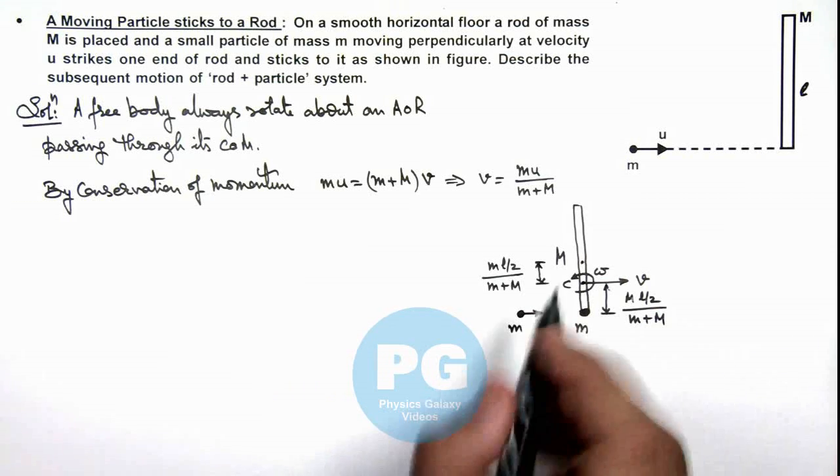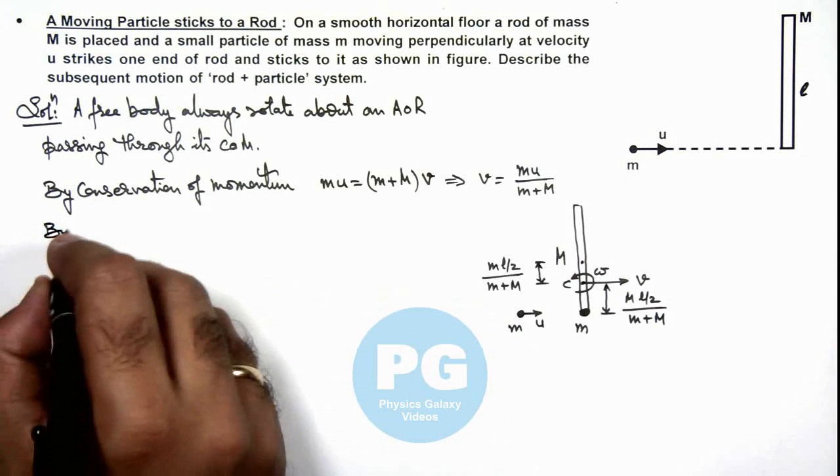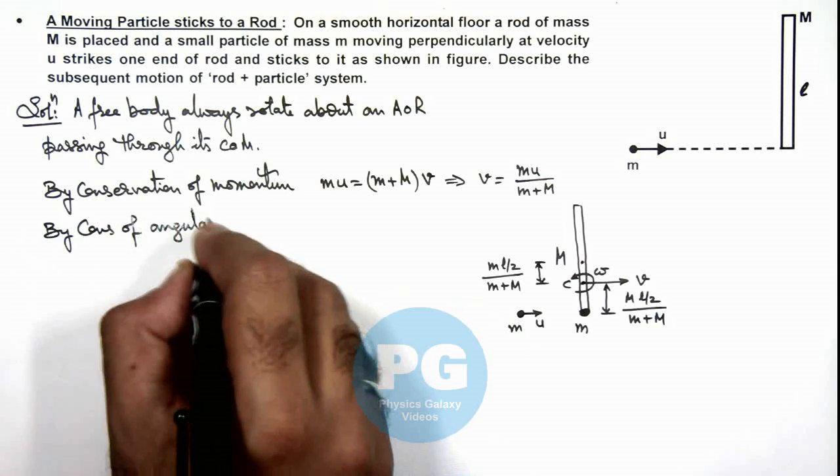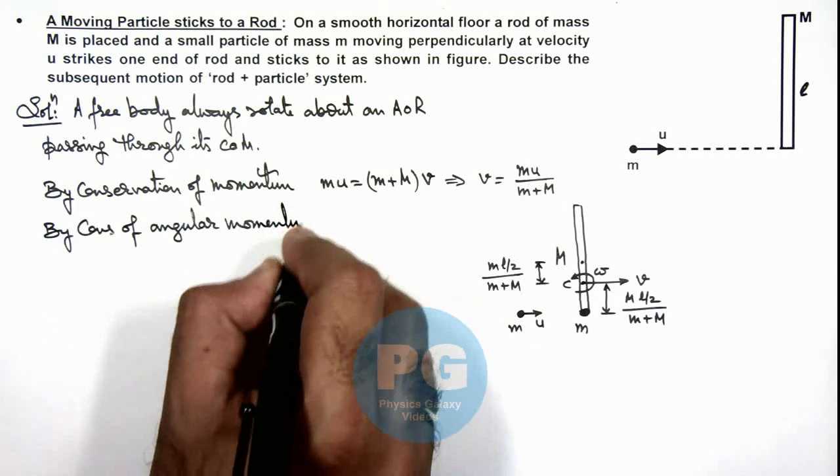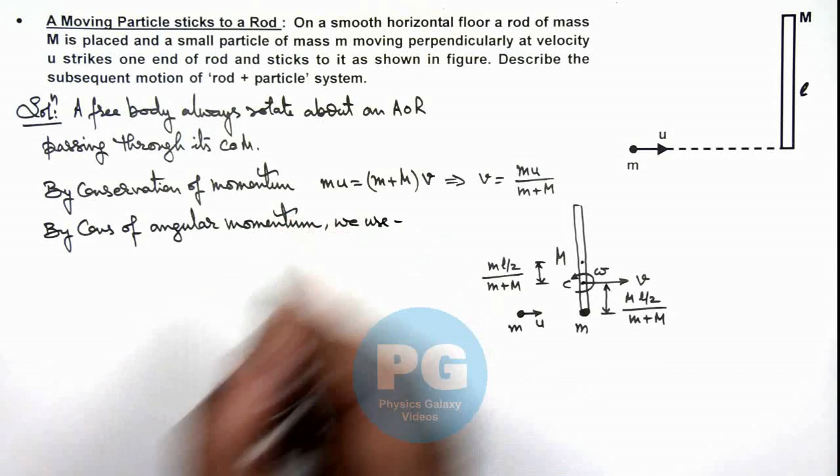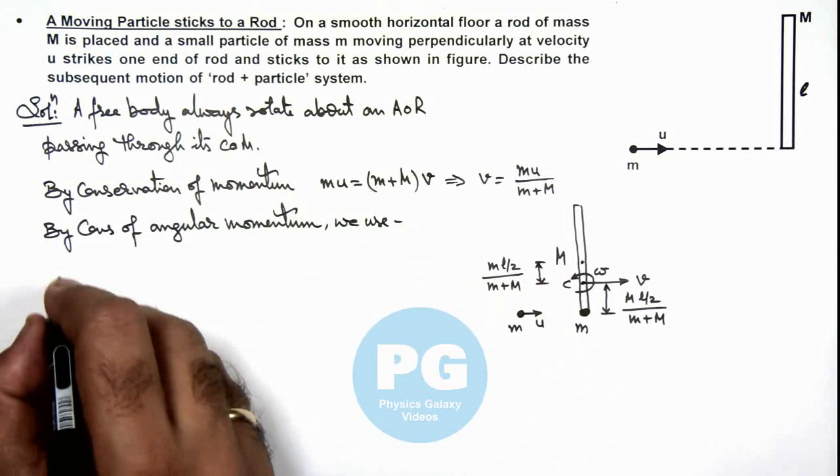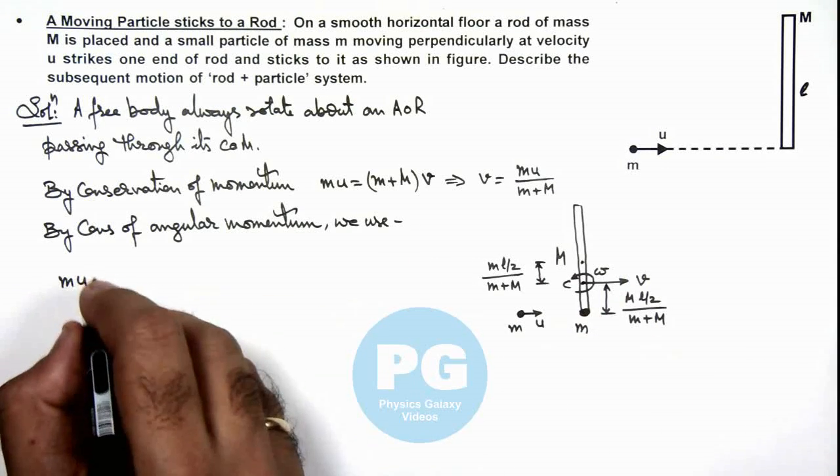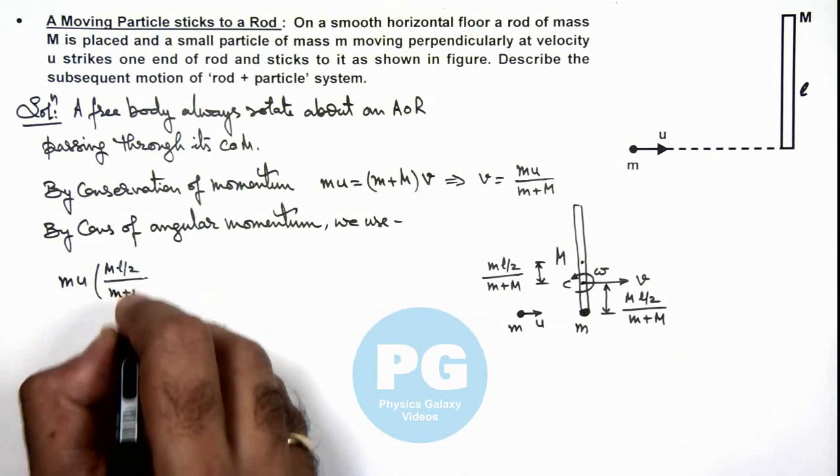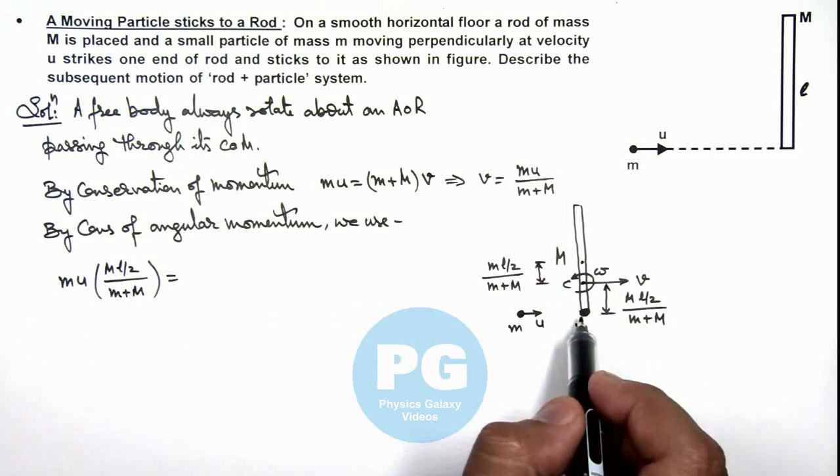Now in this situation with respect to this center we can also conserve angular momentum. By conservation of angular momentum, the initial angular momentum of the particle of mass m is mu times the distance (Ml/2)/(m+M), which must equal the final angular momentum of this rod plus this mass.